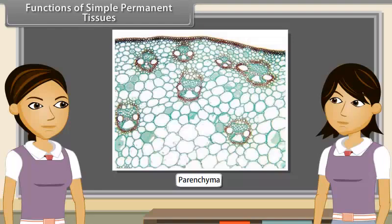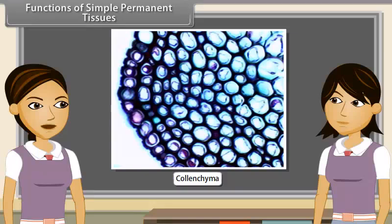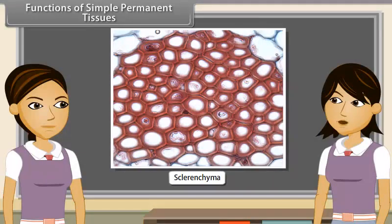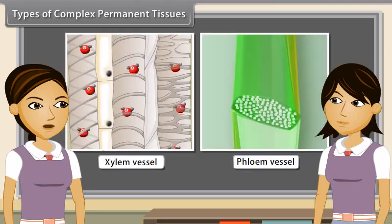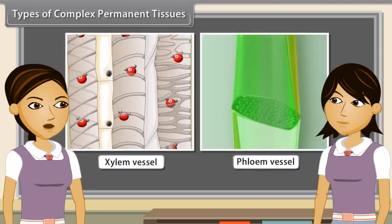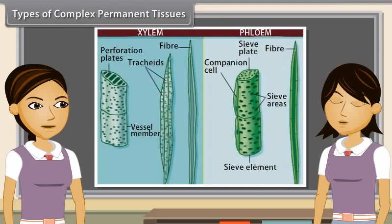Parenchyma serves as a packaging tissue to fill the spaces between other tissues and maintain the shape of the plant. Due to its turgid cells it also stores and assimilates food, and transport of material occurs through its cells or cell walls. Its intercellular spaces allow gaseous exchange, and it also stores waste products like tannin, gum and resins. Collenchyma is a mechanical tissue providing mechanical support and elasticity. Sclerenchyma is mainly mechanical and protective in function, giving strength, rigidity, flexibility and elasticity to the plant body, enabling it to withstand various strains.